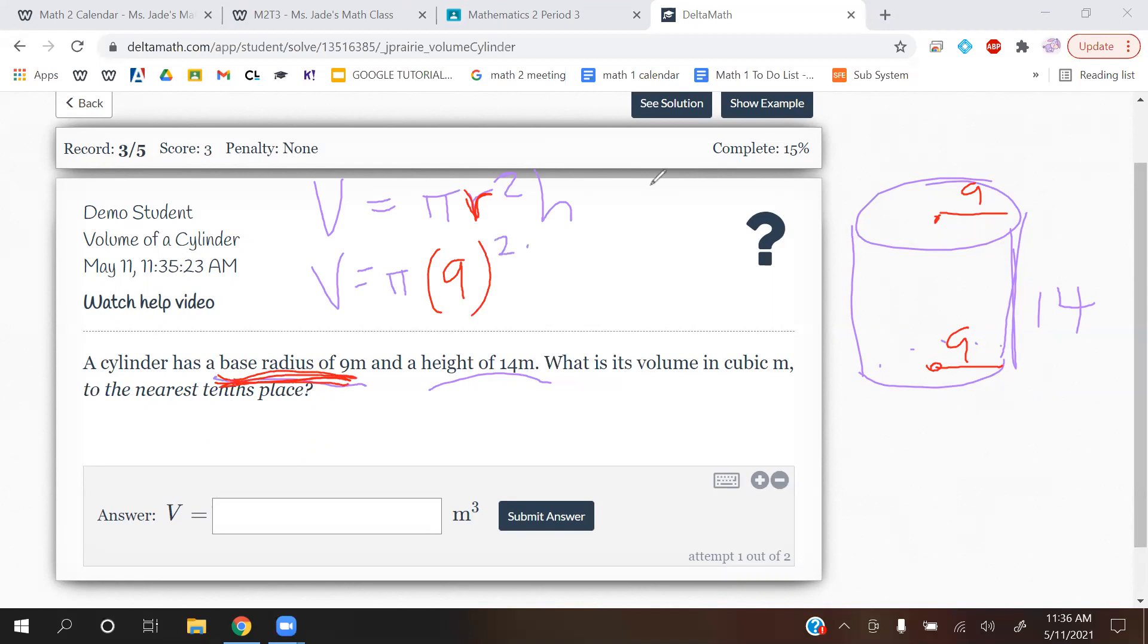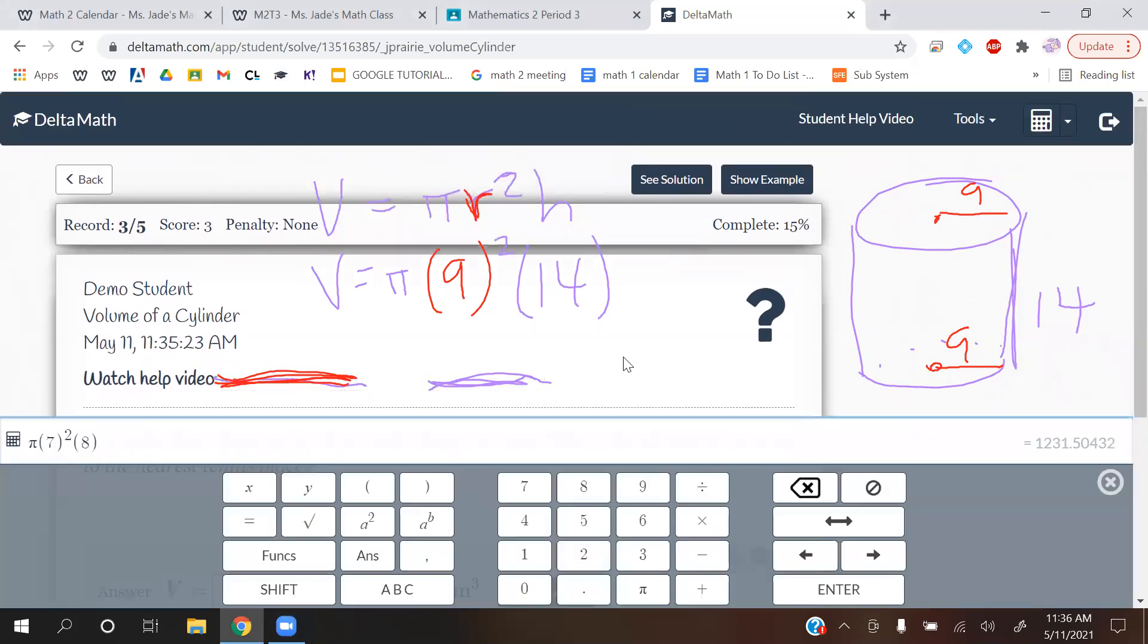Height, and then h is the height. They always just give us the height, so it's π, 9 squared, 14. We're going to round this to the nearest tenths place. Let me just type it in the calculator.